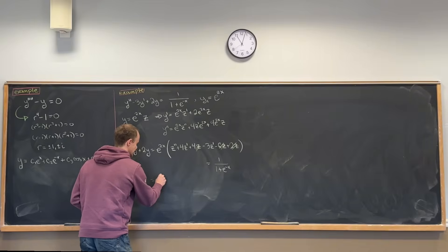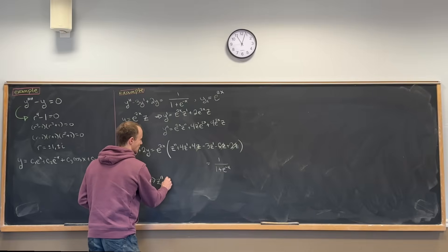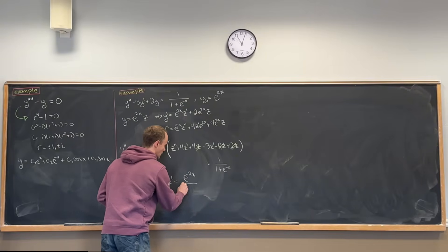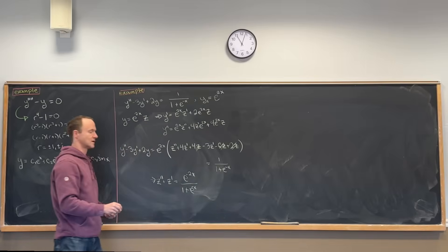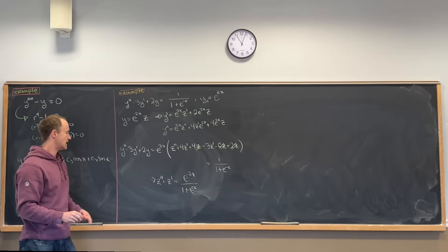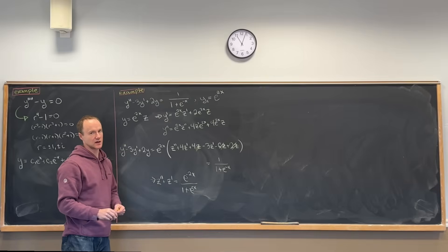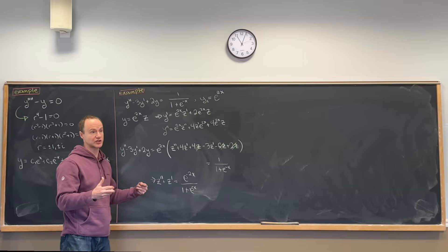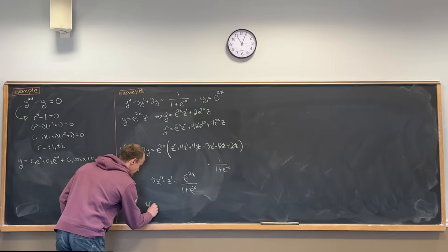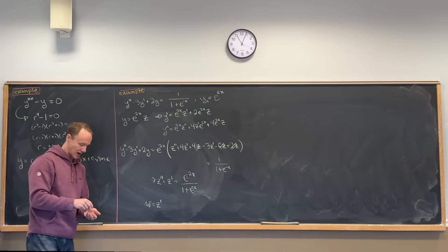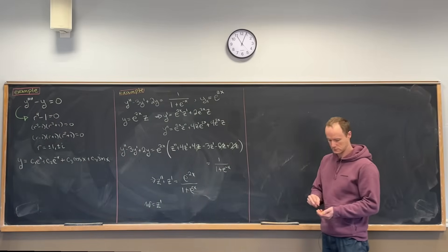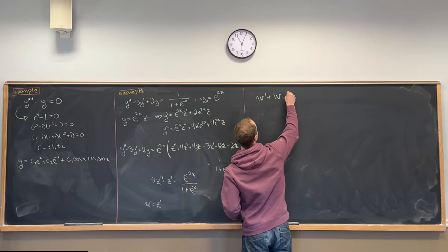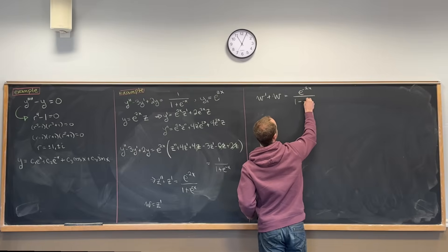After cancellation, this turns into z double prime plus z prime equals e to the minus 2x over 1 plus e to the minus x. You can solve this using methods for a first-order linear differential equation, because if you think of z prime as your function, it is first-order linear. Setting w equal to z prime, we get the first-order equation w prime plus w equals e to the minus 2x over 1 plus e to the minus x.